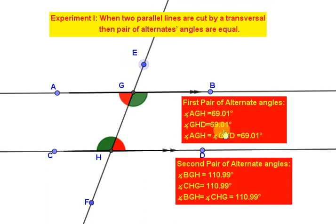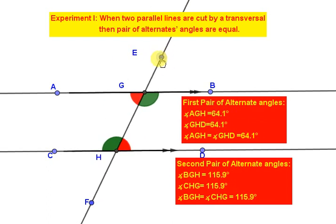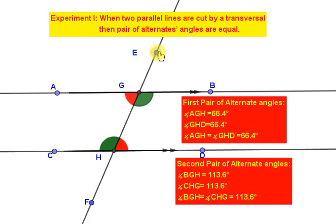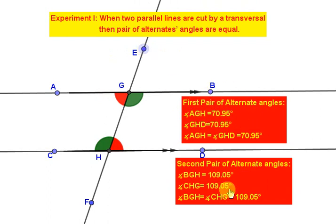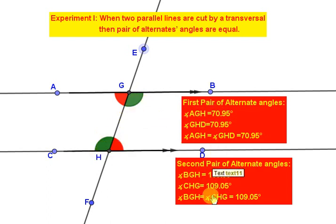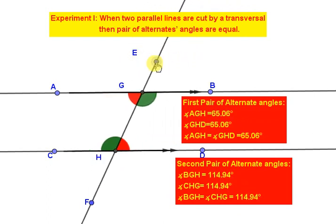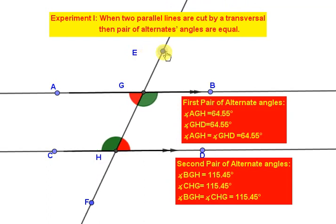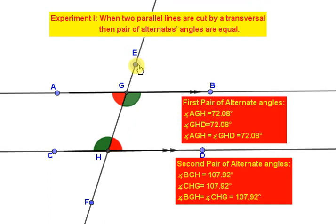If you look at the first pair of alternate angles, you can see they are equal to each other. The second pair — angle CHG and the corresponding green angle — these two green angles are also equal to each other, as you can see on screen. And if you move point E, both the first pair and the second pair of alternate angles remain equal to each other.